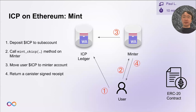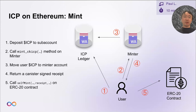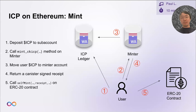The receipt is a canister-signed message. The user gets the actual message and then submits it to the ERC-20 contract on Ethereum. The Ethereum contract is able to verify this is a message actually signed by the minter canister on IC. It will only allow the token to be minted after verifying the signature and confirming the amount, sender, and all that checks out. Then it will issue the ERC-20 token to the user. This is kind of offline communication — the message is carried through a canister-signed message and the user is responsible for forwarding it from the canister to the ERC-20 token.